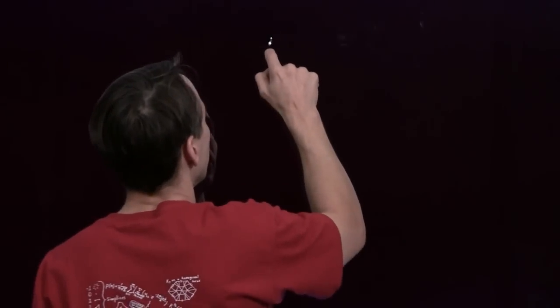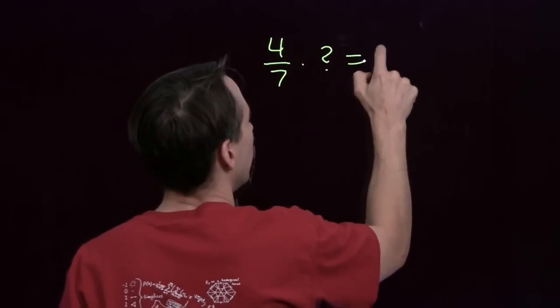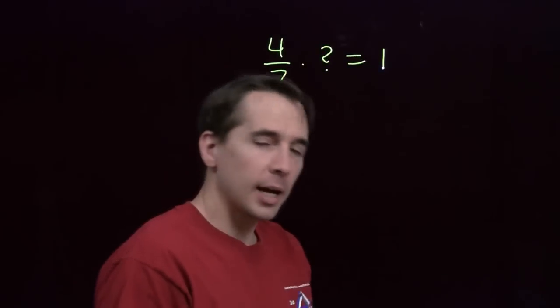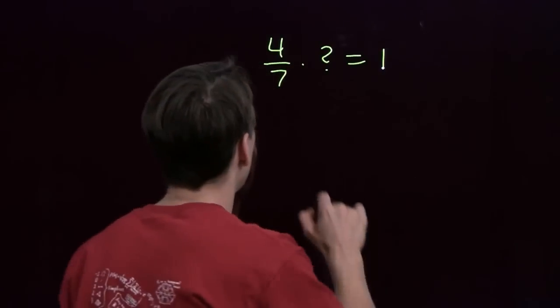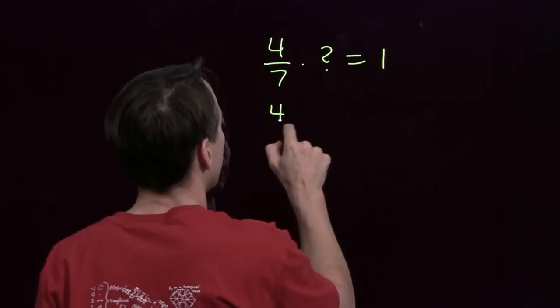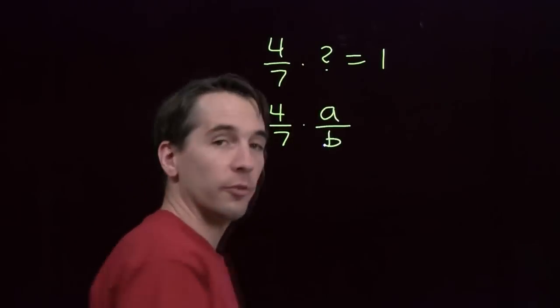So we want the reciprocal of 4/7. Reciprocal, that means we're going to look for the number that if we multiply 4/7 by our mystery number, we'll get 1. Now I'm going to take a guess here. Guessing has a long and glorious history in mathematics. I'm going to guess that my reciprocal is also a fraction.